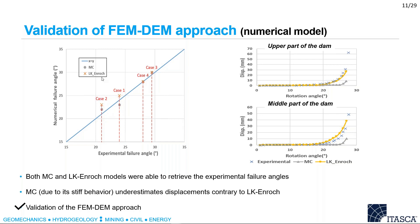The difference between the two constitutive models lies in the displacement field. Looking at the right figures — displacements as a function of rotation angle in the upper and middle parts of the downstream pitching — the blue crosses are experiments, yellow is Alca-Roche, and gray is Mohr-Coulomb. Alca-Roche retrieved a very similar displacement progression to the experimental results, whereas Mohr-Coulomb underestimated displacements due to its stiffness behaviour. The validation of the FEM-DEM approach was successfully completed.